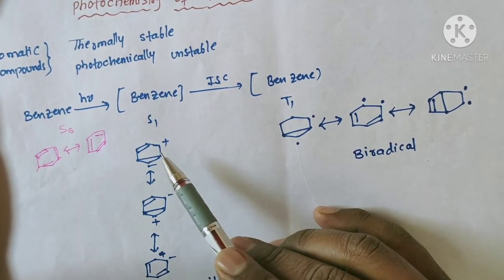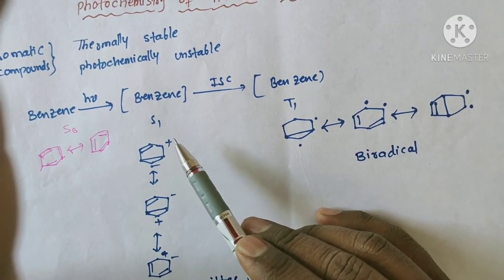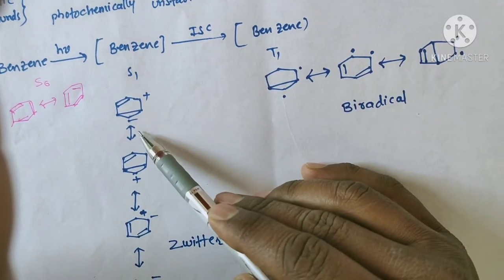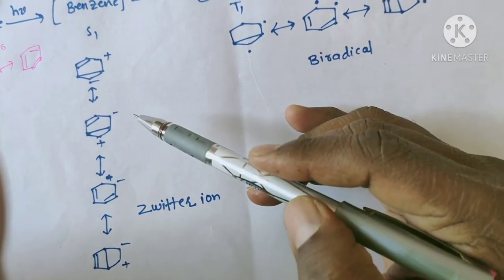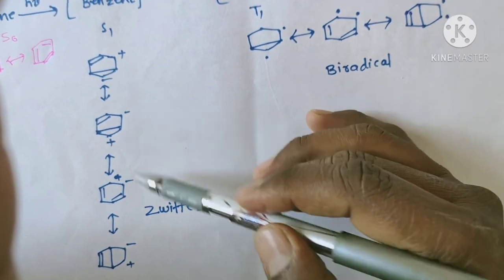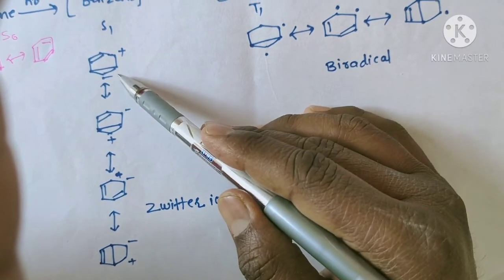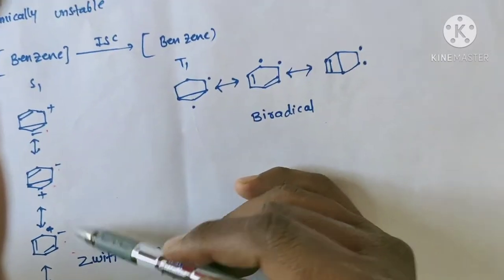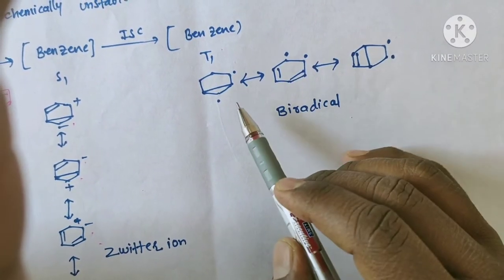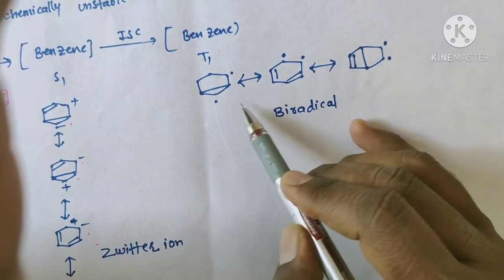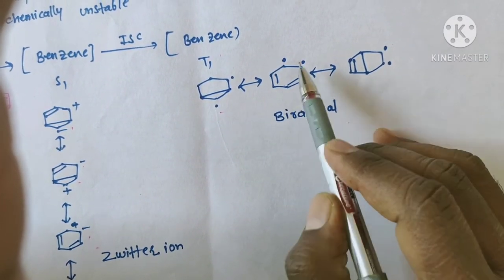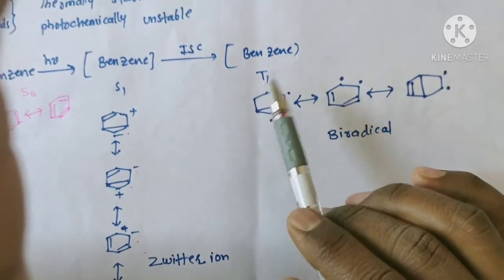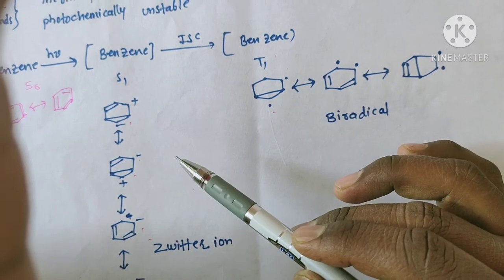A zwitterion is an ion which possesses two types of charges — positive as well as negative. Benzene undergoes resonance and exists as different types of zwitterions in the excited singlet state. These are the possible zwitterion structures of benzene in the excited singlet state. In the excited triplet state, it exists as the 1,2 or 1,3 biradical. So in the excited singlet state it exists as the zwitterion, whereas in the excited triplet state it exists as a biradical.